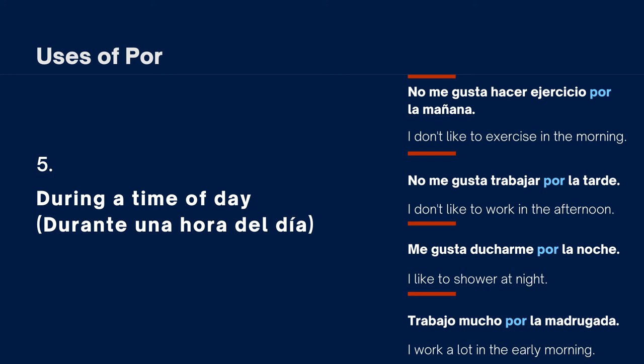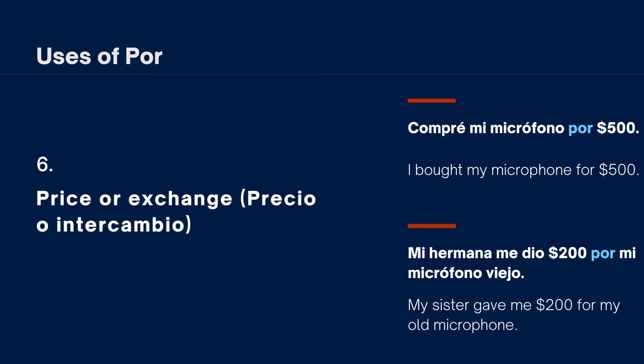Use of por number six is price or exchange — precio o intercambio. Examples: 'Compré mi micrófono por 500 dólares' (I bought my microphone for 500 dollars); 'Mi hermana me dio 200 dólares por mi micrófono viejo' (My sister gave me 200 dollars for my old microphone). These illustrate por used in financial transactions or exchanges.